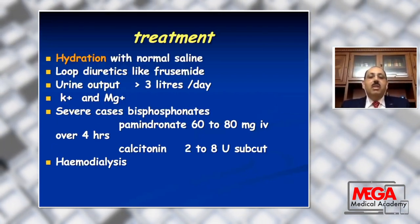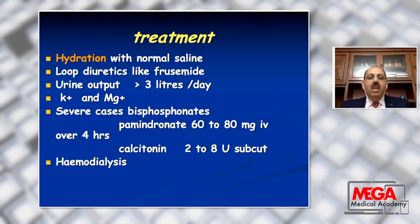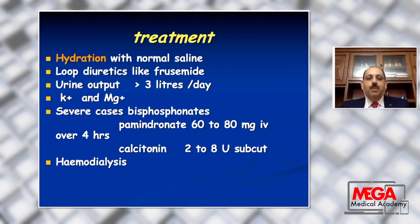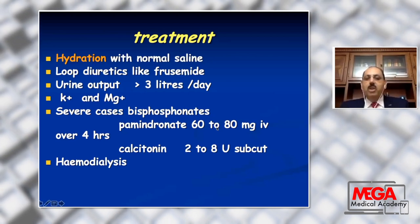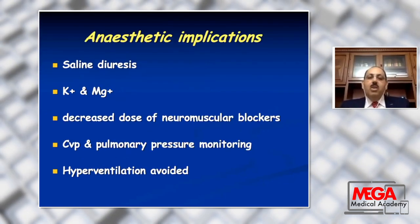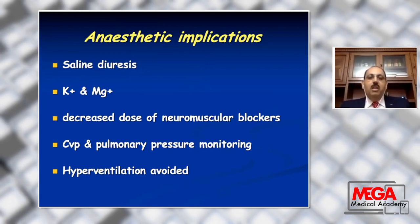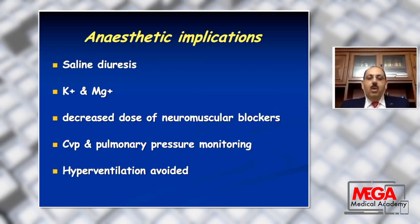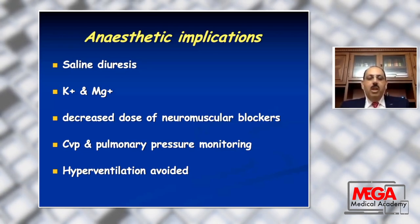The treatment: first, good hydration with normal saline. Then give loop diuretics like furosemide to maintain urine output more than three liters per day. Correct the associated potassium and magnesium abnormalities. In severe cases, give bisphosphonates such as pamidronate 60 to 80 mg IV over four hours, calcitonin 2 to 8 units subcutaneous, and in resistant cases, hemodialysis. Anesthetic implications: correct hypercalcemia before the operation by saline, good hydration, then diuretics, correction of associated potassium and magnesium disorders. Consider decreased dose of neuromuscular blockers, central venous pressure and pulmonary pressure monitoring, and hyperventilation should be avoided.